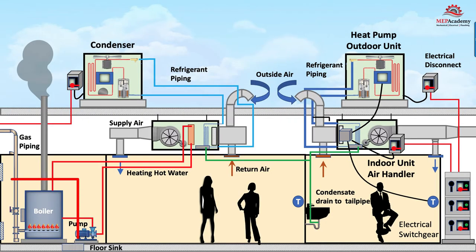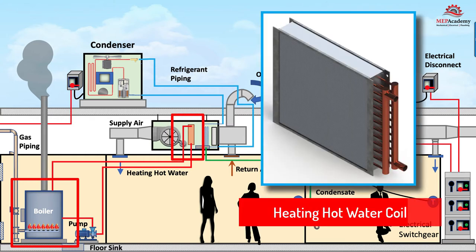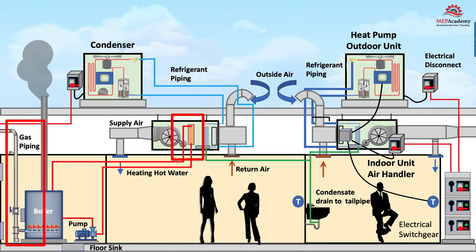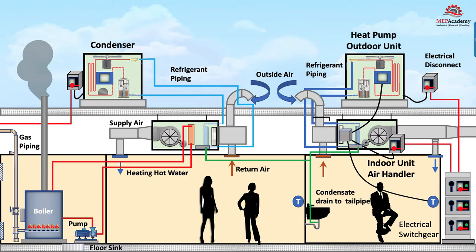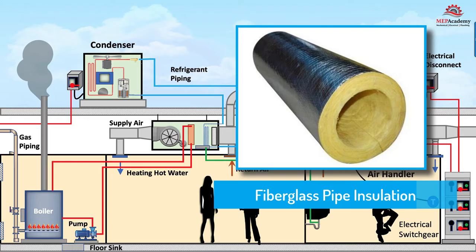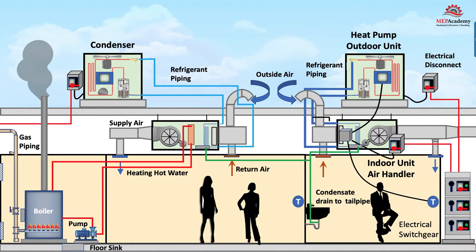Another option is to use a boiler to provide heating hot water to a coil located inside the air handler. The boiler will need a source of fuel for combustion, in this case natural gas. The heating hot water will need a pump to circulate the water to all of the air handlers in the building. Here we only show one air handler getting heating hot water, but it could also be dozens more in larger buildings. The heating hot water piping will need to be insulated, most likely with fiberglass pipe insulation to prevent the loss of heat from the pipes. Not shown is make-up water or other accessories like expansion tanks. This could also be a steam boiler with a steam coil in the air handler to provide heating.